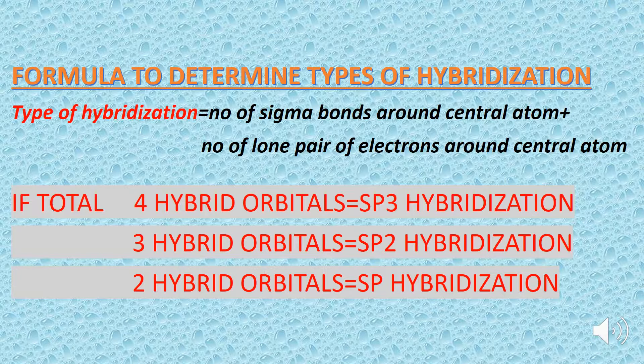If the total number of hybrid orbitals is 3, then the hybridization is SP². While if we have two hybrid orbitals, then the hybridization is SP hybridization.